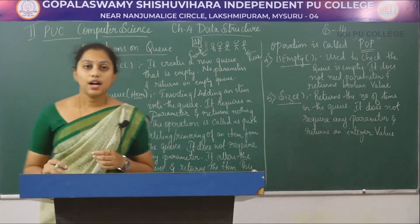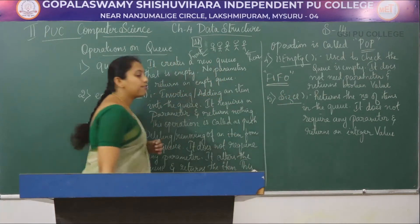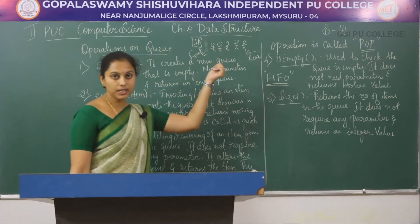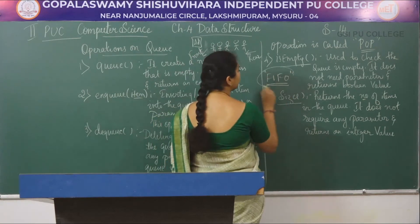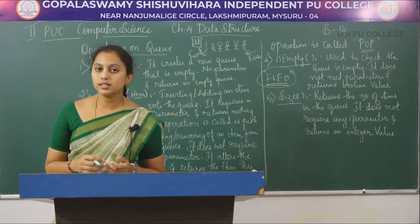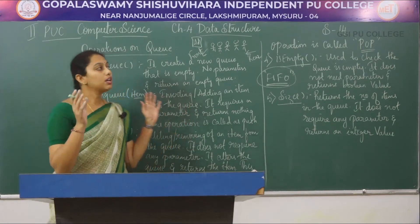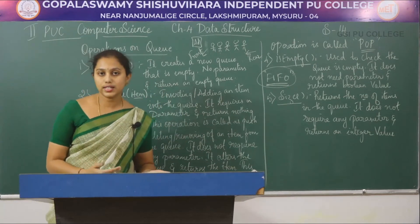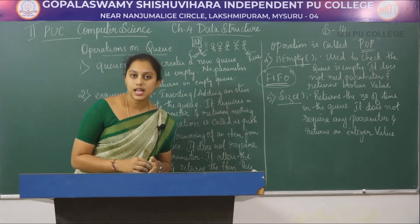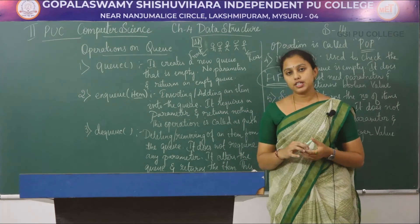A queue follows FIFO — that is, First In First Out technique. The first person who enters is going to be deleted first. A queue is a collection of items where insertion and deletion of an item takes place at different ends, and we can perform operations such as queue, enqueue, dequeue, is-empty, and size.